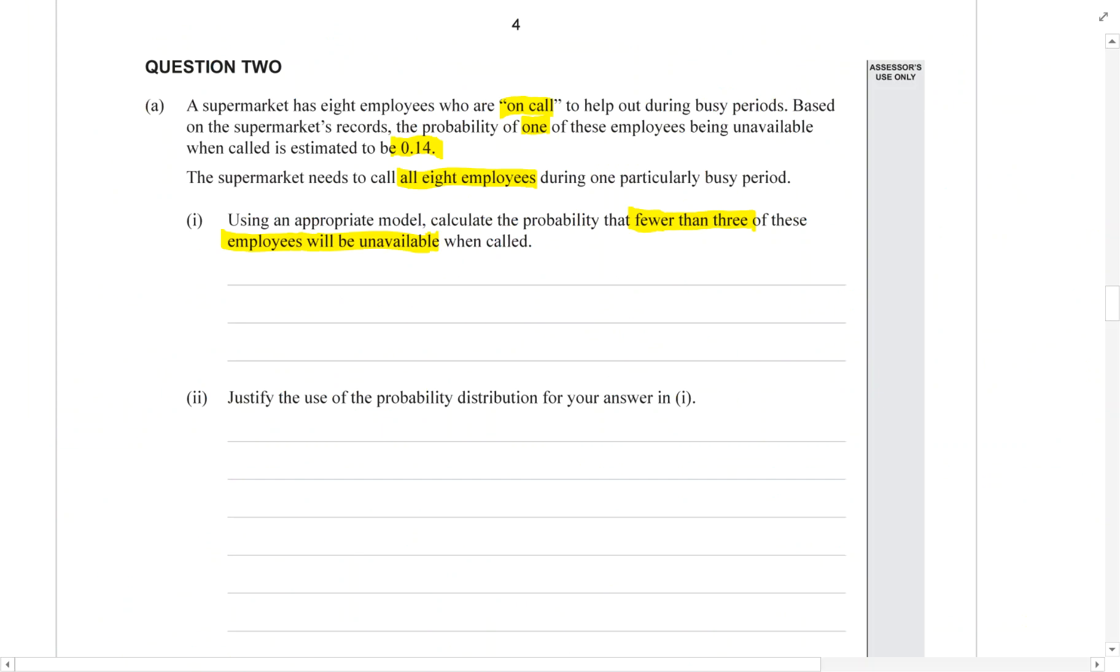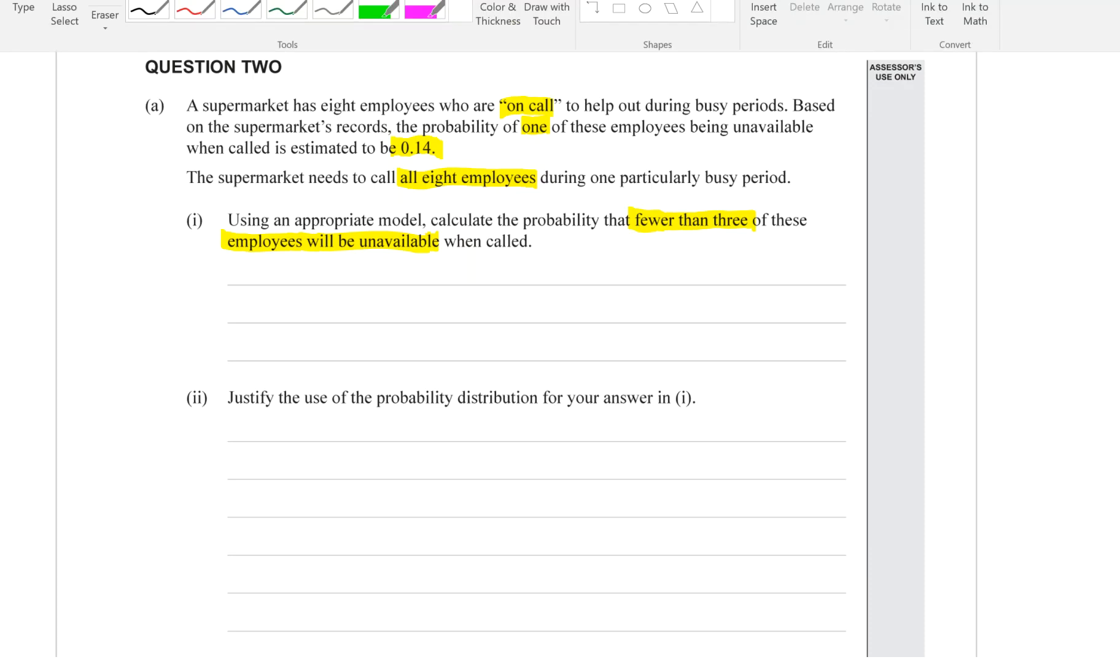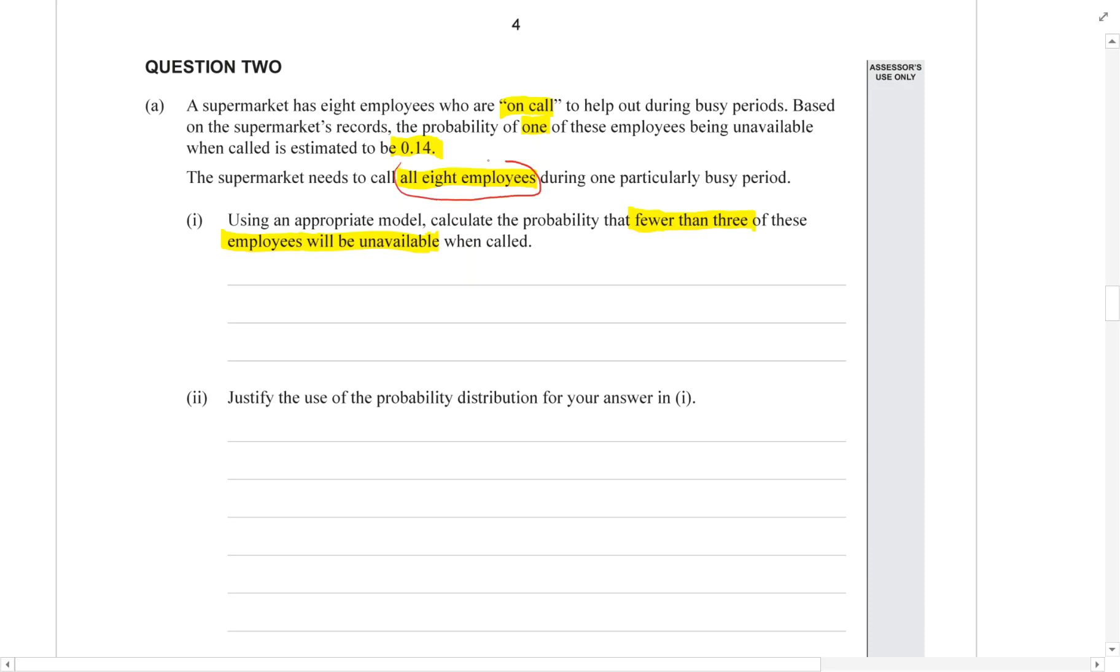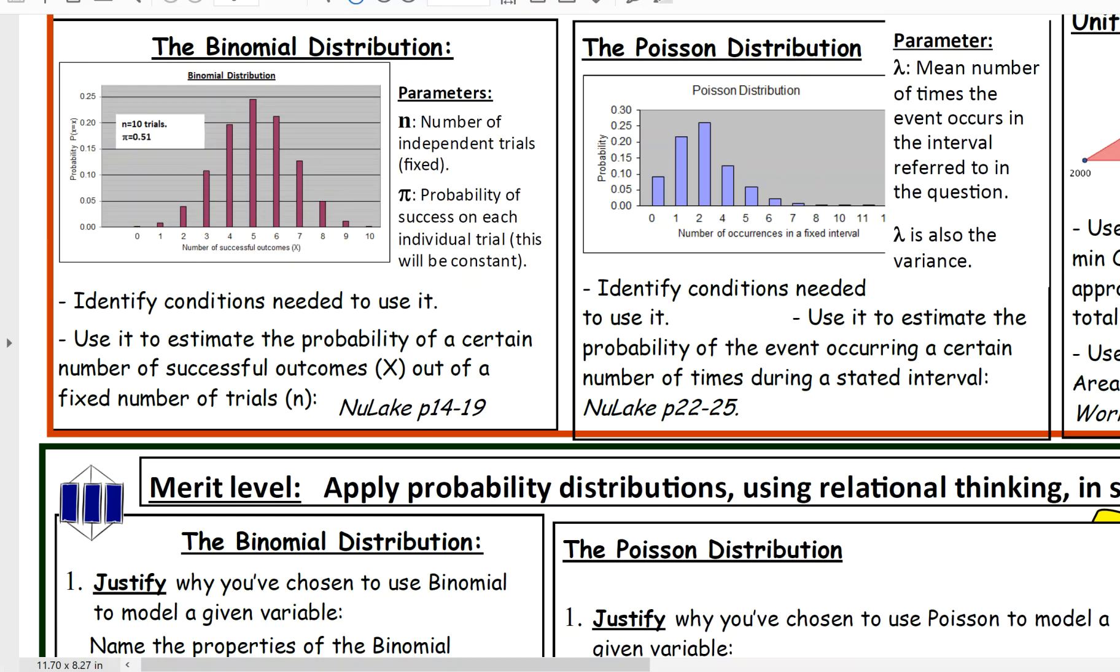We're told it's during a busy period, but it doesn't say how long that period is. It does say it's out of eight employees. Therefore, it's out of a fixed number of trials. The eight employees are the trials. And that makes it, you guessed it, binomial.